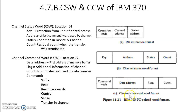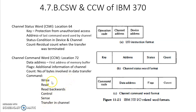Now let us look at the channel command format — the channel command word, CCW. It has four fields: command code, data address, flags, and count. With the command code field, it is possible to determine which operation is going to be performed. There are six basic operations available: write, read, read backwards, control, sense, and transfer in channel.